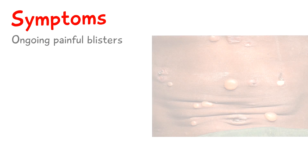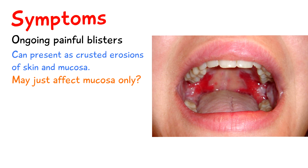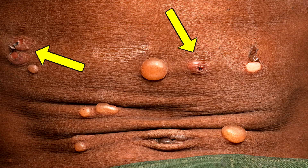The symptoms of pemphigus vulgaris are ongoing painful superficial blisters, or they can present as erosions of the skin and mucosa. In some patients it may only affect the mucosa, so the presentation is often just in the oral cavity. The blisters that form in the epidermis are flaccid and can rupture really easily, so some patients just show up with crusted lesions or erosions where the blisters used to be. Generally these blisters and erosions are quite painful.